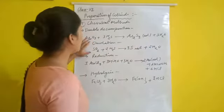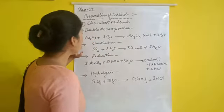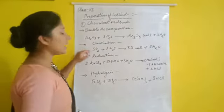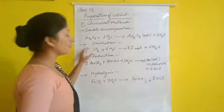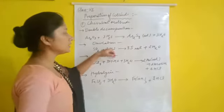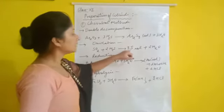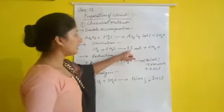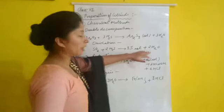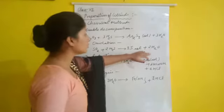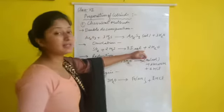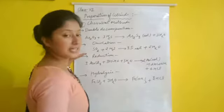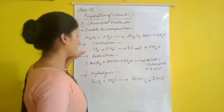The second chemical method is oxidation. Sulfur dioxide reacts with hydrogen sulfide to give a sulfur sol and water molecules. So we can prepare a sulfur sol by the oxidation method.